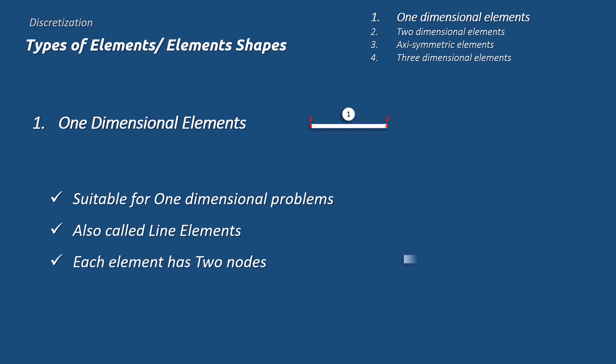Consider a bar which is discretized into two elements, element number 1, element number 2. Each element is composed of two nodes. Element 1 consists of node 1 and 2, and element 2 consists of node 2 and 3.